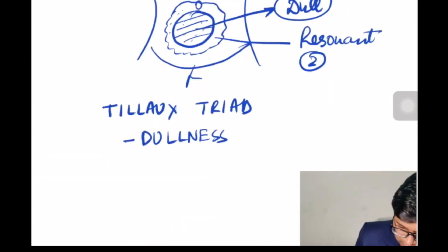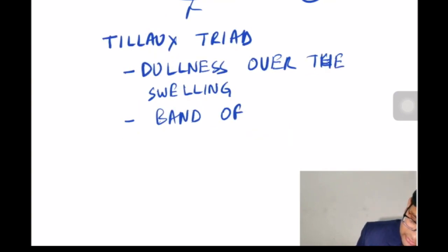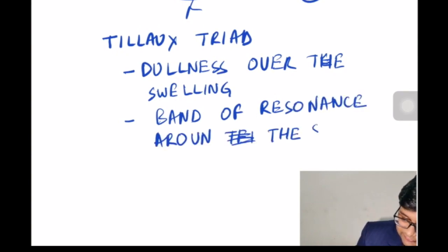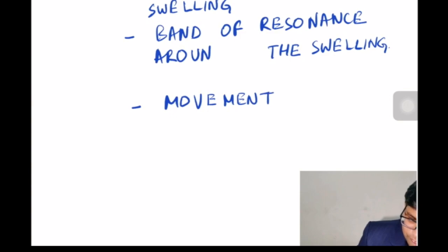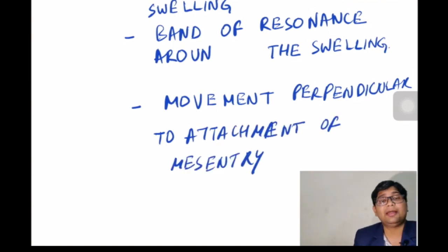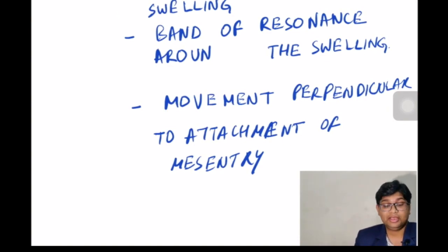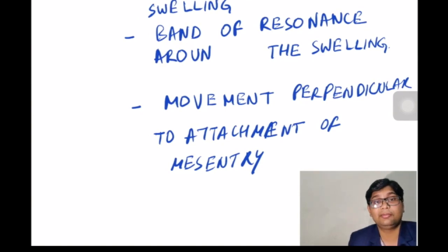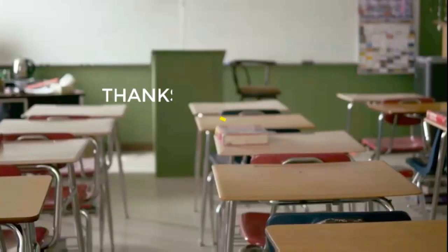To summarize Tilak's Triad: dullness over the swelling, band of resonance around the swelling, and movement perpendicular to the attachment of the mesentery. These things should be remembered by understanding the concepts and pathophysiology, rather than by rote cramming. If you pay attention to the basics, you will be able to remember all of these.